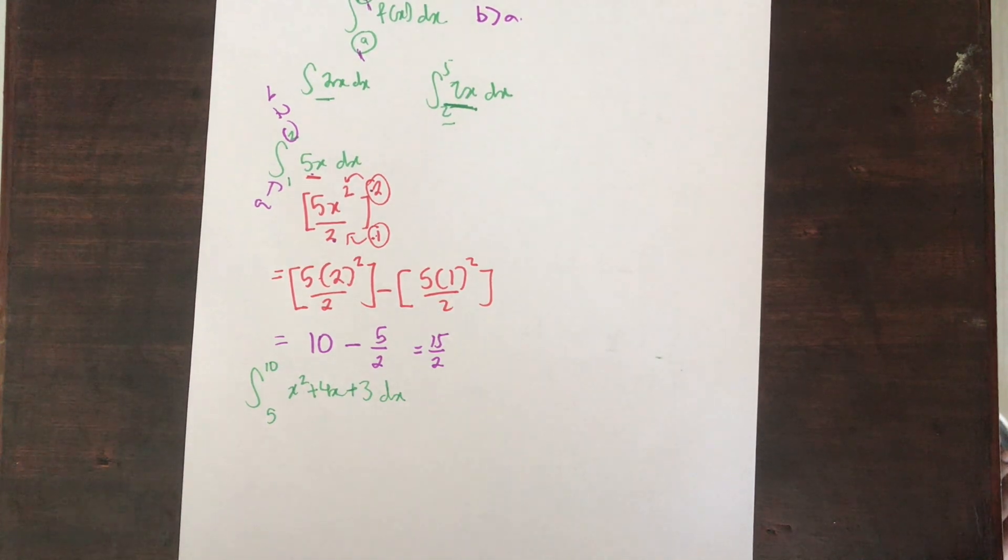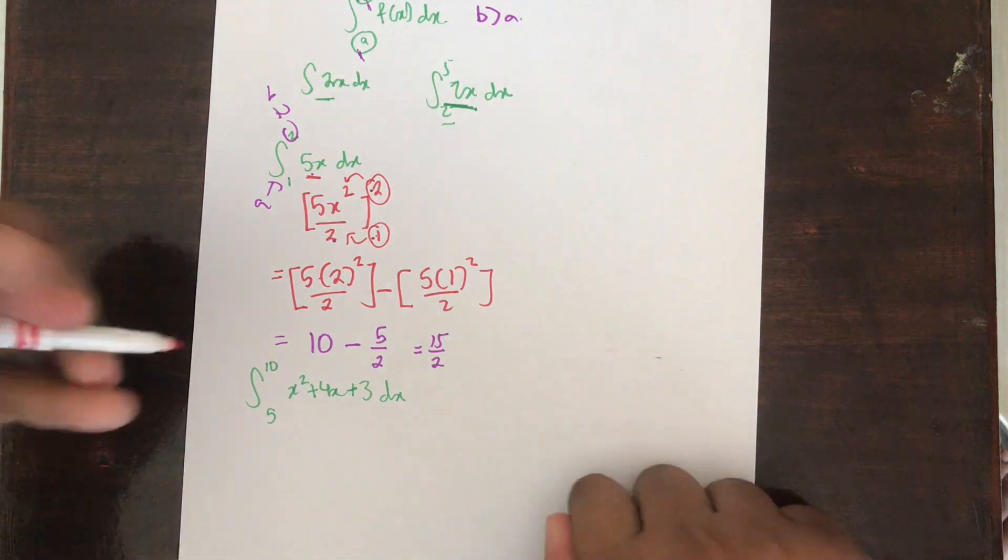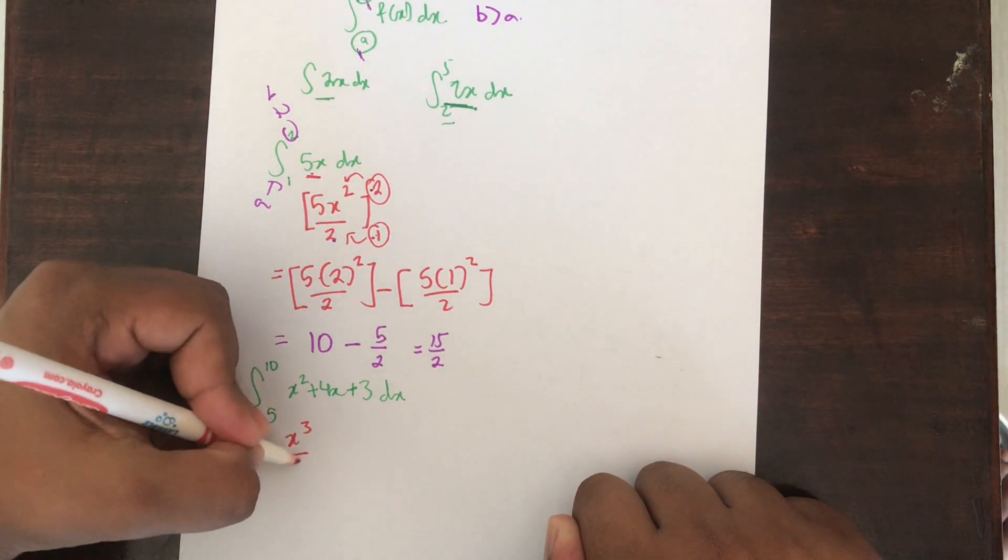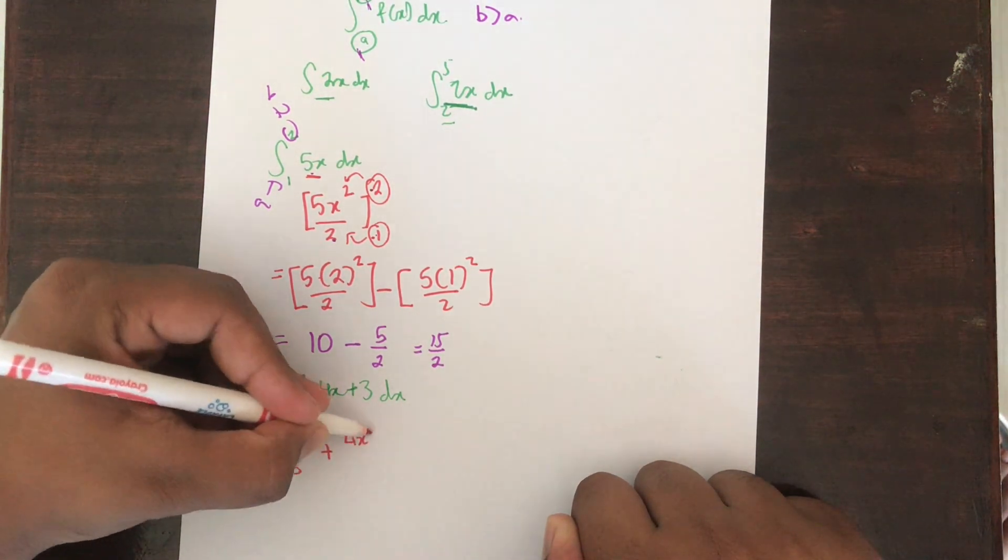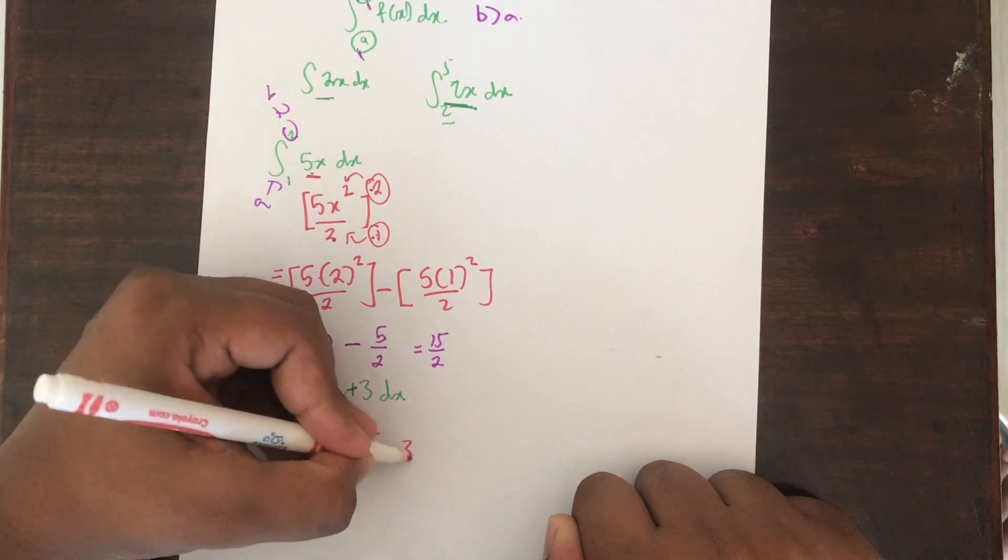Let's do this question: integral of x squared plus 4x plus 3 with respect to x, but you're given limits as 5 and 10. Again, just do it the normal way on how we learned it. Integrate each term separately.